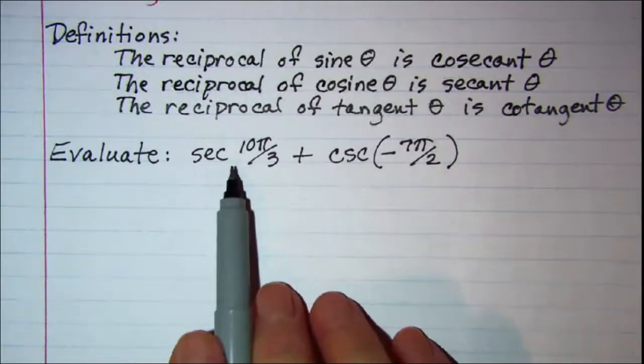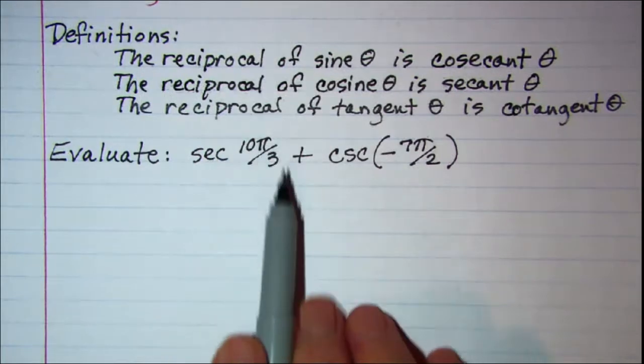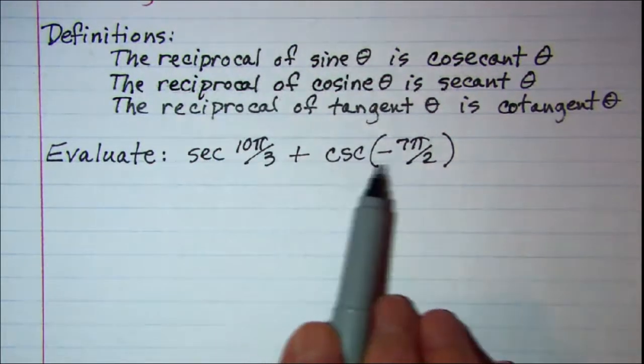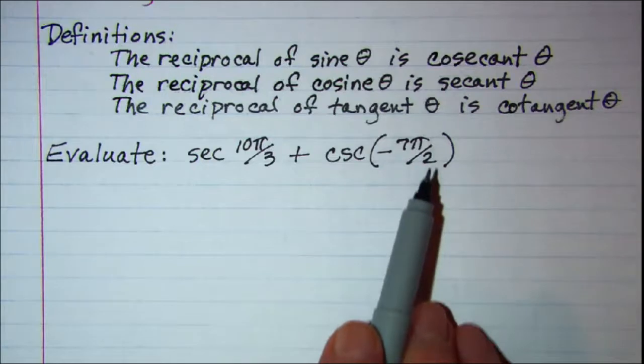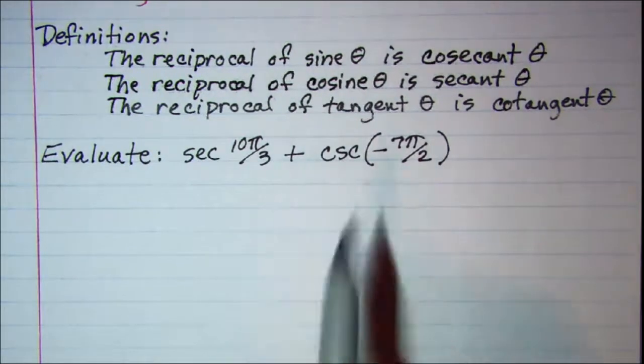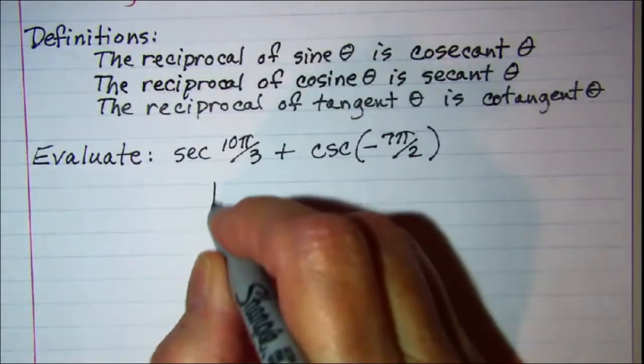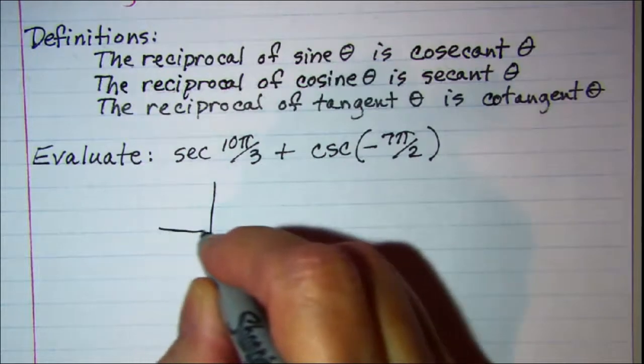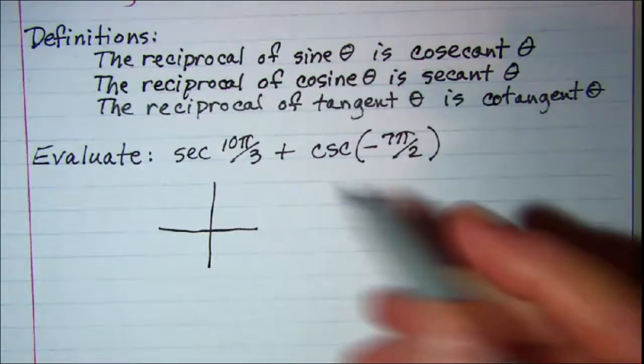Our first problem will be the secant of 10π over 3 plus the cosecant of negative 7π over 2. So our angles are in radians. Let's draw some reference triangles so we can work with these.